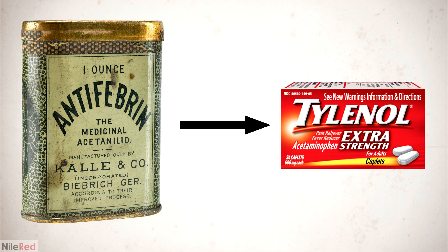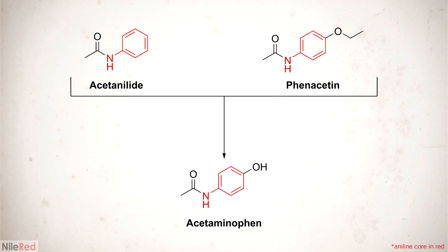Nowadays, antifebrin and other related medications have been completely replaced by acetaminophen, also known as paracetamol or Tylenol. It was eventually discovered that acetanilide and many of the other aniline-based pain relievers were not themselves effective, and they were simply being metabolized to acetaminophen.